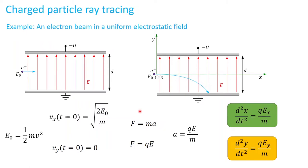The example we want to investigate is an electron that passes through a uniform electric field. Here we have ground on one side and minus U on the other, so the electric field is uniform and directed upward. The value of the electric field is U divided by the distance d. The electron has an initial energy of E₀ and is initially moving parallel to the x direction, but when it enters the region with the electric field it will be deflected.